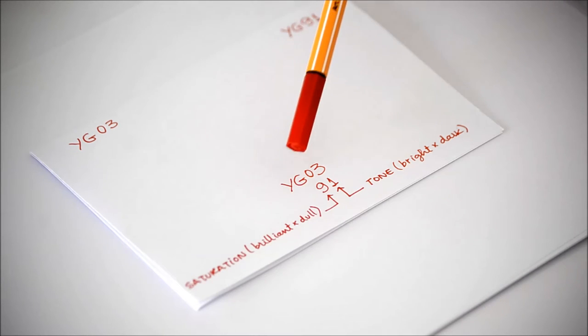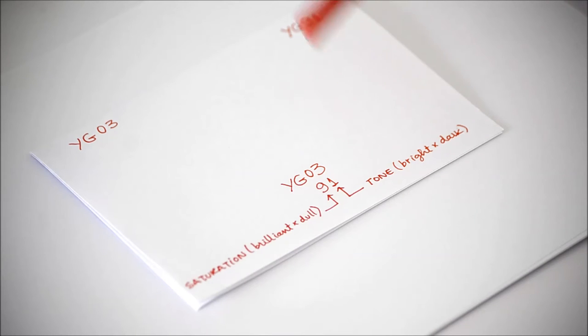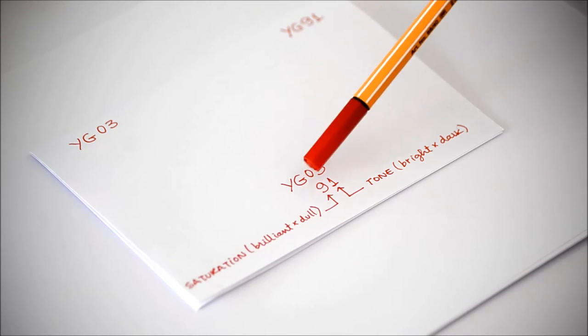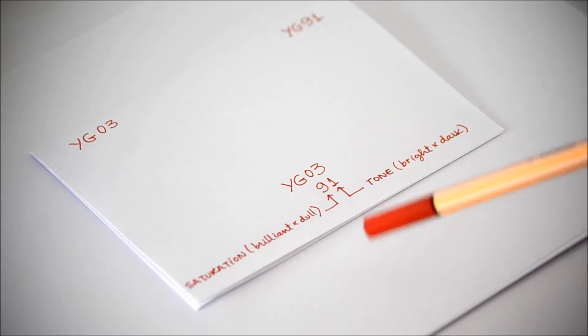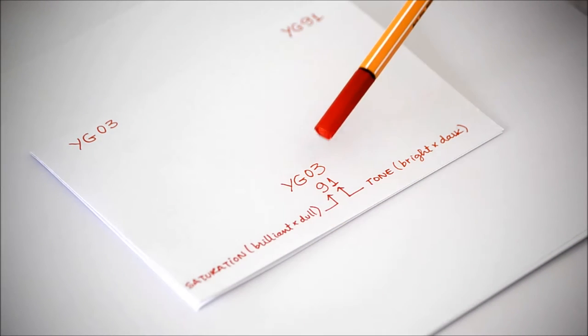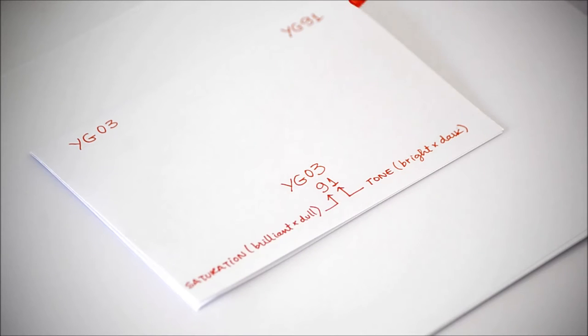So we read 0-3 and 9-1 to know about the saturation and the tone of the color. The first number talks about how brilliant or how dull the color is. So we're talking about the saturation. And the second number talks about how bright or how dark the color is. So it's about the tone.